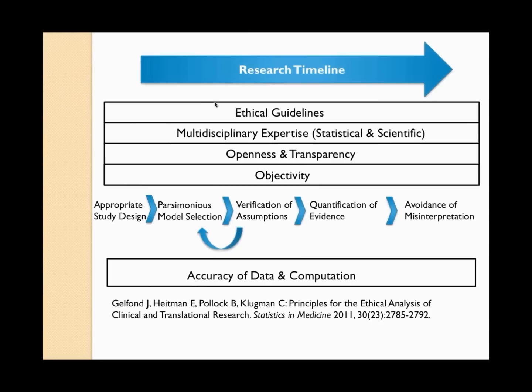Here's the outline of the principles we'd like to discuss. From left to right is the research timeline — from the early conceptual phase on the left, to the experimental and data collection phase, to the publication phase on the far right. Throughout the process, good statistical practice requires awareness of professional ethical guidelines, multidisciplinary expertise, openness and transparency, objectivity, and is underlined by accuracy in data and computation. In the early phases we require appropriate study design, and after data is collected we need parsimonious model selection, verification of assumptions, quantification of evidence, and avoidance of misinterpretation.